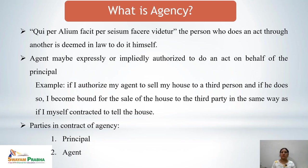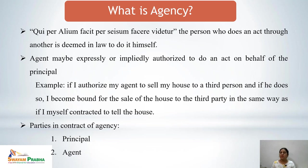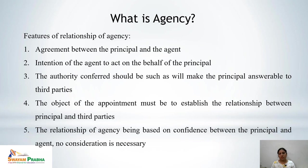The agency may be express or implied, and an agent may be expressly or impliedly authorized to do an act on behalf of the principal. For example, if I authorize my agent to sell my house to a third person and he does so, I become bound for the sale of the house in the same way as if I myself had contracted to sell it. In a contract of agency there are always two parties: the principal, who authorizes another to act on his or her behalf, and the agent, who is so authorized.